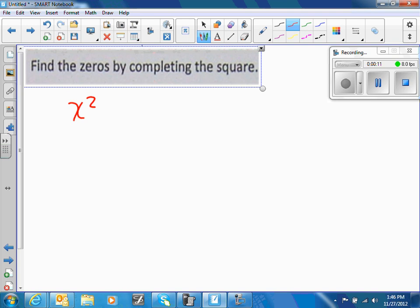So x squared minus 2x minus 8 equals 0. Now you want to add the 8 to the other side. Bring this down. Now remember to leave yourself a little space here folks.